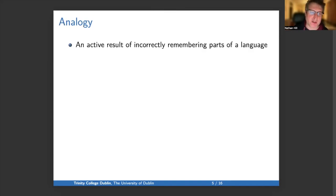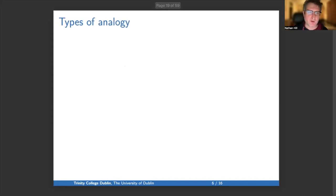In contrast to sound change, analogy is an active result of incorrectly remembering parts of a language. It is totally capricious in its application and leads to greater regularity in terms of morphology. The rest of the presentation will focus on analogy. There are three main types of analogy: four-part analogy, contamination, and reanalysis.